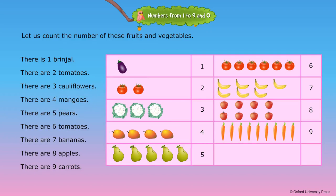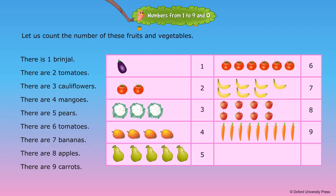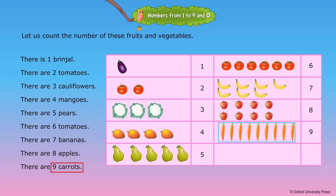There are six tomatoes. There are seven bananas. There are eight apples. There are nine carrots.